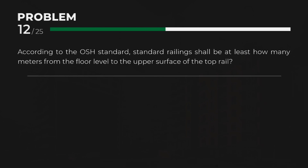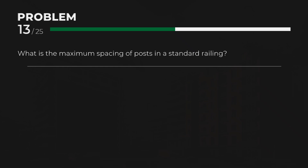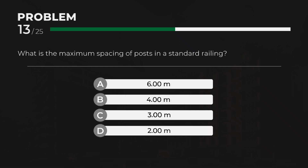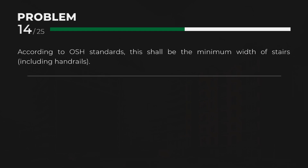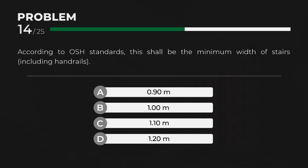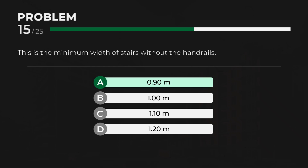According to the OISH-H standard, standard railings shall be at least a specified number of meters from the floor level to the upper surface of the top rail. What is the maximum spacing of posts in a standard railing? According to OISH standards, the minimum width of stairs including handrails is C, 1.10 meters. The minimum width of stairs without handrails is A, 0.90 meter.